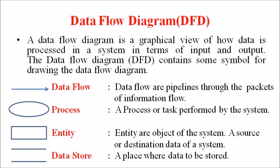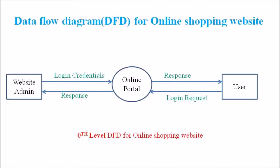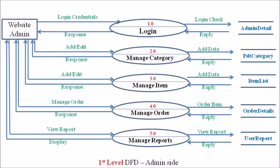In the previous two lectures we had discussed the data flow diagram for the online shopping website. In the level 0 DFD we discussed two entities — website admin and user entity — and one process known as the online portal process. In the level 1 DFD at the admin side, we discussed five independent processes: login, manage category, manage item, manage order, and manage report. In lecture 41 we discussed the login and manage category processes as level 2 DFDs. In this lecture we are discussing the level 2 DFD for manage item, manage order, and manage reports.